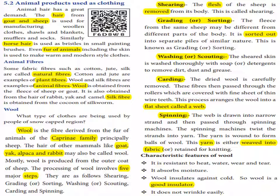Wool and silk fibers are examples of animal fibers. Wool is obtained from the fleece of sheep or goat. It is also obtained from the hair of rabbit, yak, and camel.